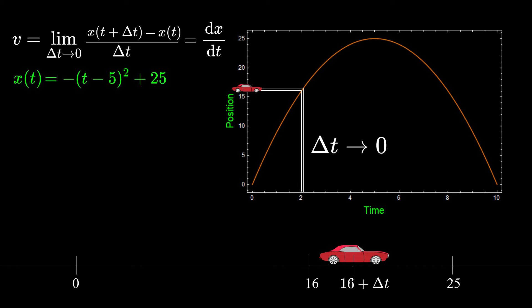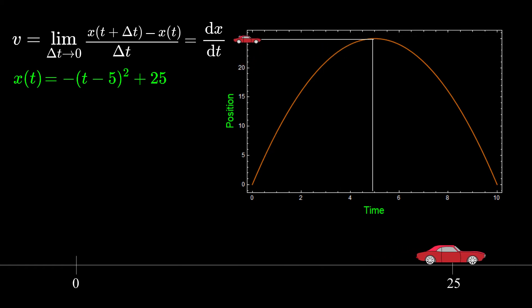Let's try to calculate the velocity at each point for the position function that looks like this. Our car is moving to a certain point and then back to its starting point, but its velocity is changing during the journey.